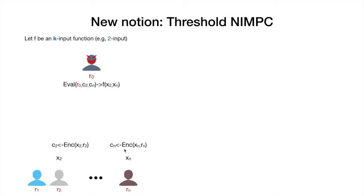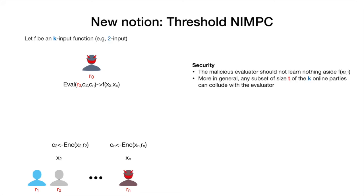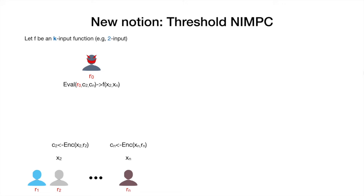As our first contribution, we consider a new notion that naturally combines the previous two. We call it threshold non-interactive MPC. Not only do we allow the evaluator to collude with other parties, but we also do not require all n parties to be participating in the online phase. In particular, we denote with k the input arity of the function we want to compute, and we require only k parties to be participating in the online phase.